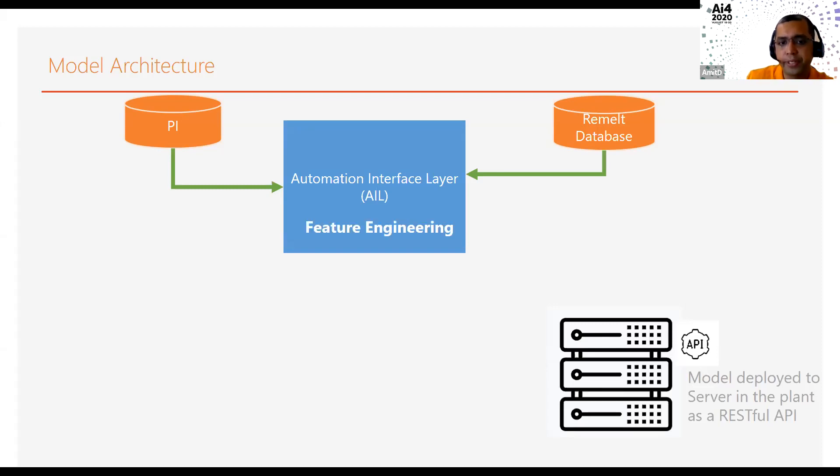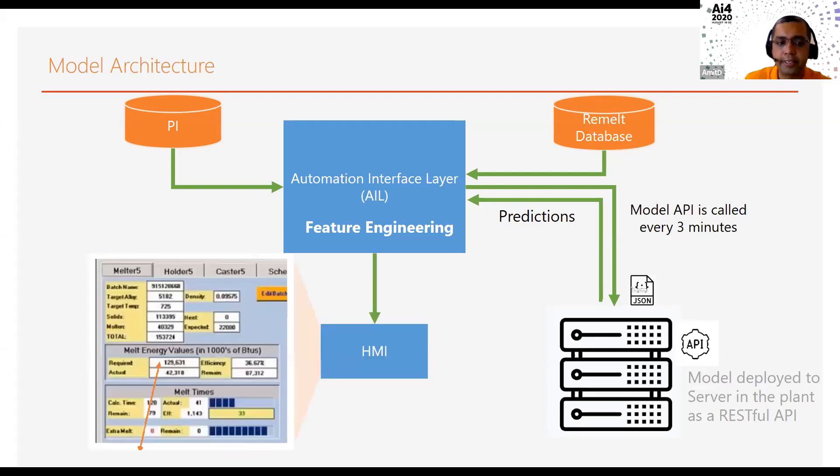where our feature engineering happens. Then the model API is called every three minutes. When we call the model API, we send the features that we have generated as a JSON file. The model takes those features, churns out the BTU predictions as an output. Those predictions are sent back to the AIL. In AIL, we take those BTU predictions and convert those to the time required for melting the aluminum. Finally, it's displayed on an HMI to the operators.